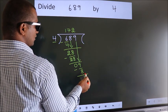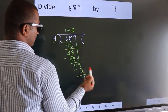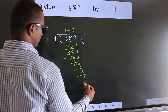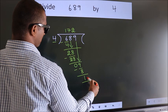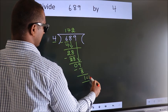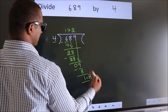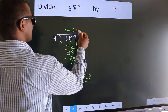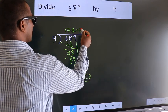No more numbers to bring down, so we stop here. This is our remainder. This is our quotient.